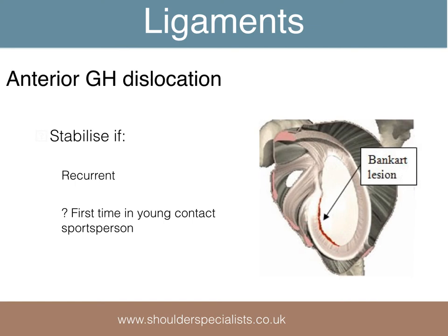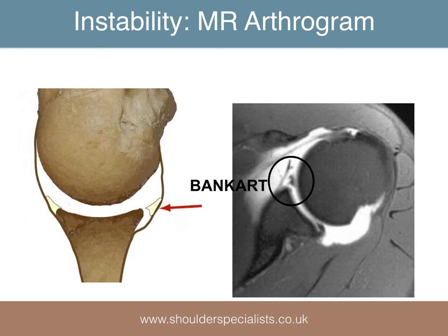Traumatic anterior dislocations, once reduced, are often managed non-operatively. However, surgery is often considered if they have become recurrent, or in the first-time dislocation in a young contact sportsman. If surgery is considered, almost invariably this would be preceded with an MRI arthrogram, where dye is placed into the joint prior to scanning. This is primarily to confirm the presence of a labral separation or a Bankart lesion, or one of its variants as shown here. If there is no significant damage to the bones, an arthroscopic Bankart repair is usually the procedure of choice.